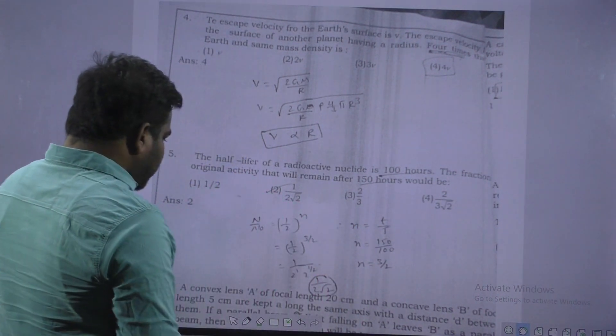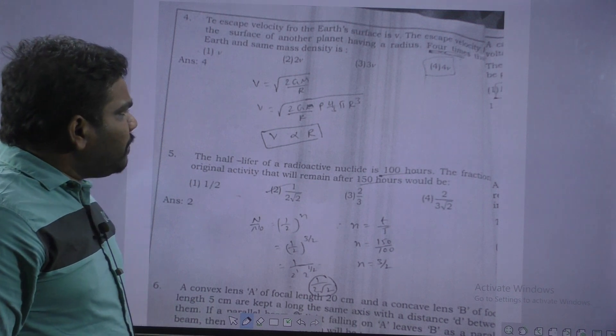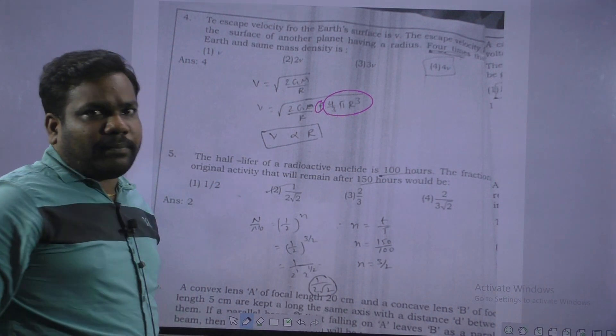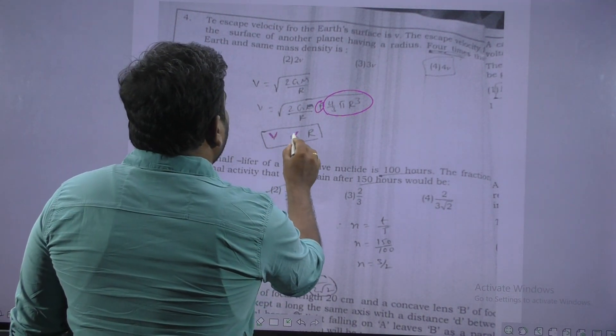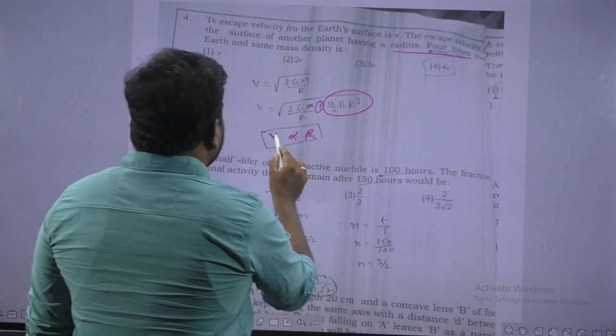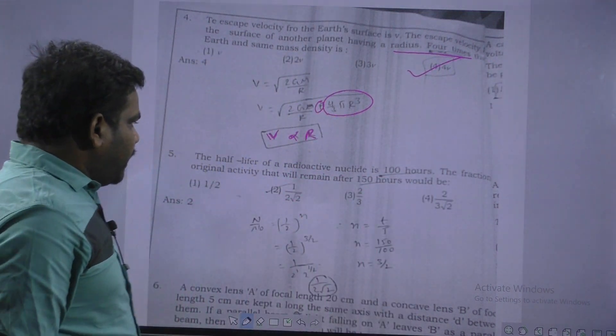Next. This is an escape velocity problem. Escape velocity we know, square root of 2 gm by r. Mass can be written as density into volume. Volume is 4 by 3 pi r cube. So after simplification, v proportional to r. So here told that radius increases by 4 times, that's why escape velocity also increased by 4 times.